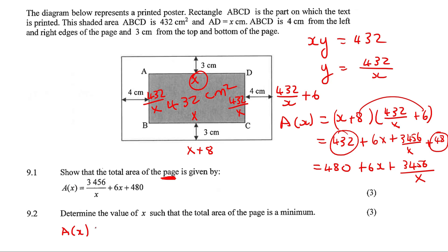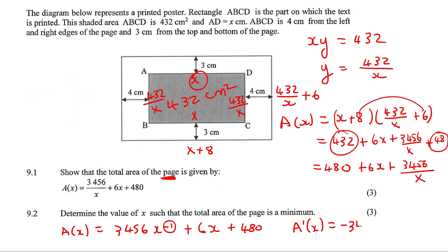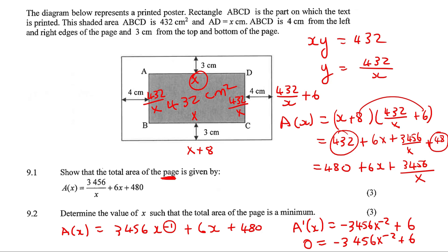So we're going to say A(X) equals... Now we're going to make this look better. We're going to bring the X up to the top, and the rest is fine. Take the first derivative now. So that's going to be: take the exponent minus 1 and multiply it in front, so the 3456/X² term becomes minus 3456 over X². Then 6X just becomes 6. And then the constant 480 falls away.